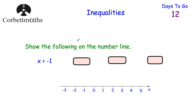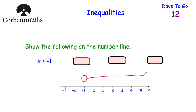Now let's look at how to draw inequalities on number lines. For x is greater than negative 1: go to negative 1, draw a hollow circle because it's strictly greater than (not equal to), then draw an arrow to the right, since all values to the right of minus 1 satisfy the inequality.